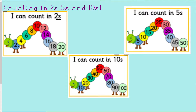Join in with me while we count in 2s, 5s and 10s. Starting with our 2s: 2, 4, 6, 8, 10, 12, 14, 16, 18, 20. Well done. Let's count in 5s: 5, 10, 15, 20, 25, 30, 35, 40, 45, 50. Well done. Let's count in 10s: 10, 20, 30, 40, 50, 60, 70, 80, 90, 100. Well done.